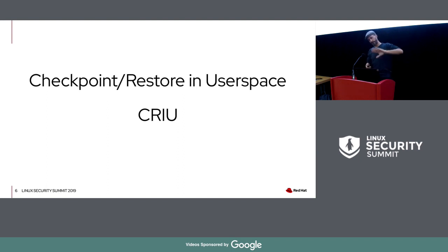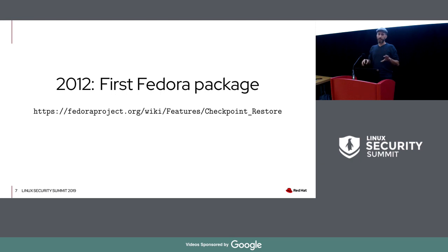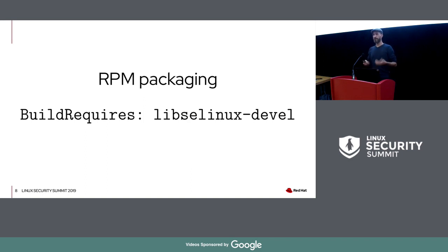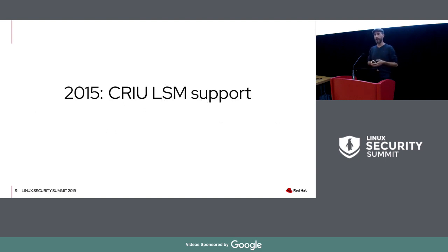To understand why the SELinux problem existed for so long: the first thing I did with CRIU was introduce the Fedora package in 2012. In Fedora 19, CRIU was available for all users, but at that time it didn't have SELinux support. For RPM packaging to pick up SELinux support, it would have needed to install libselinux in the build root, but CRIU didn't have any SELinux support, so it just worked without it. For about three years, nobody really looked into any LSM support for CRIU.